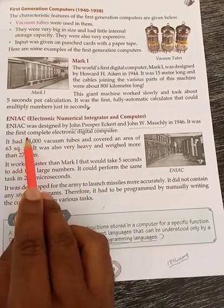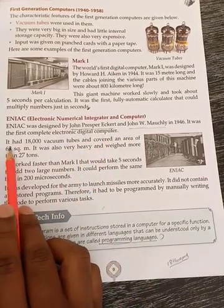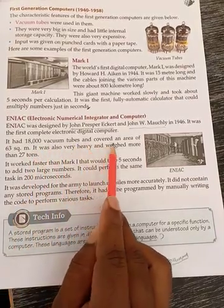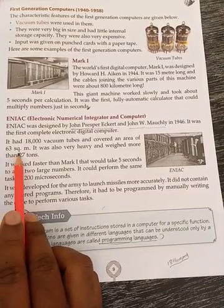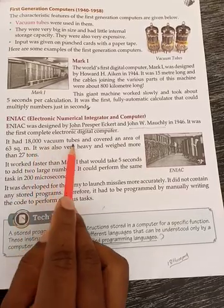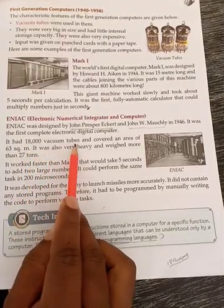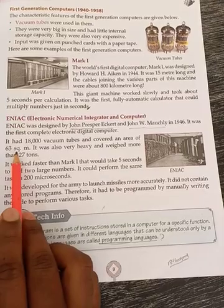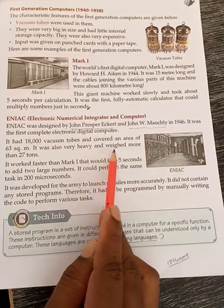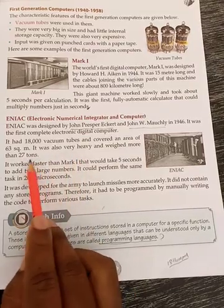ENIAC was the first complete electronic digital computer. It had 18,000 vacuum tubes and covered an area of 63 square meters. It was also very heavy and weighed more than 27 tons.